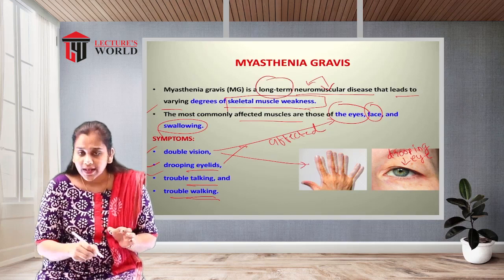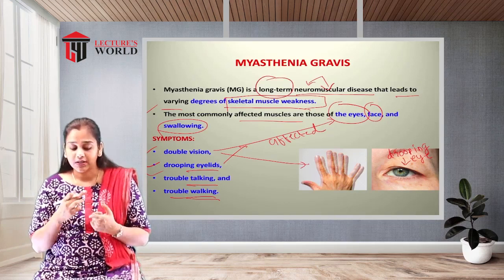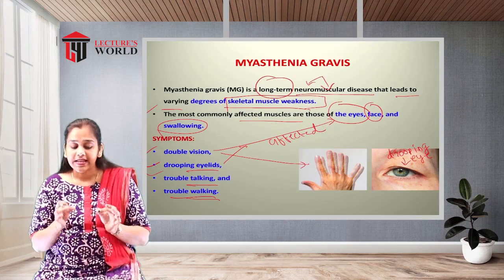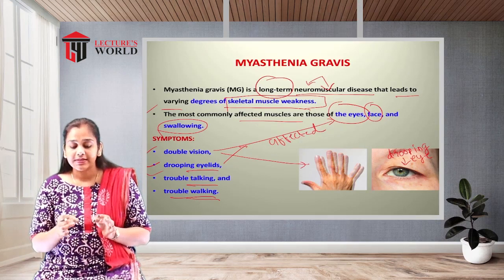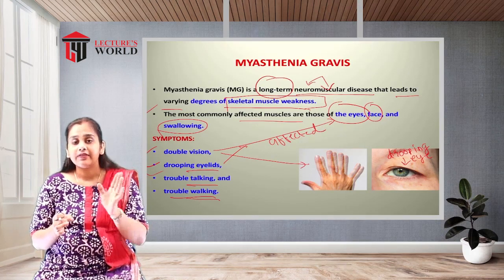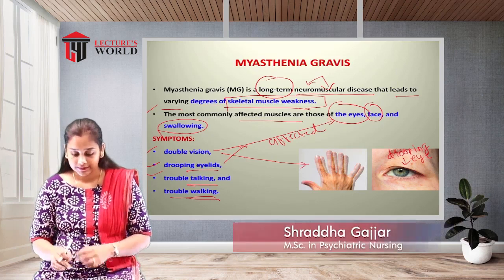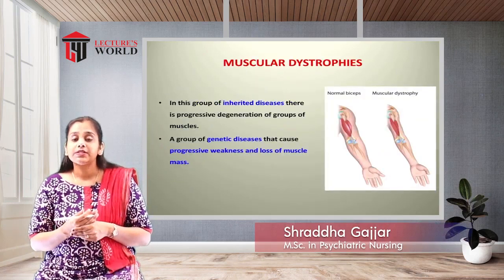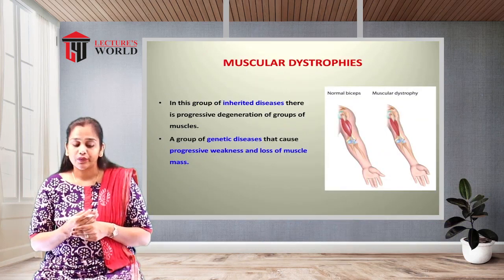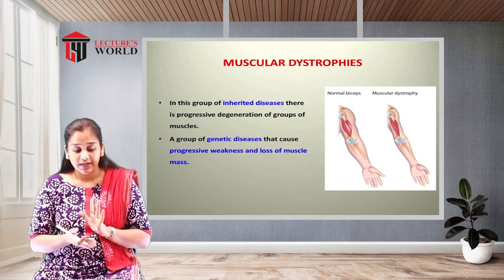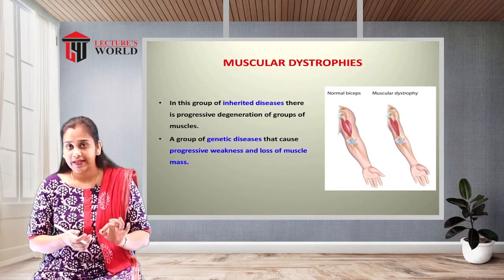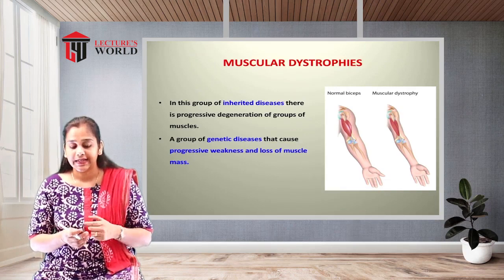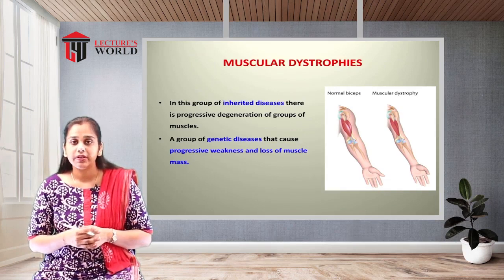So these are the symptoms of myasthenia gravis. In summary, it is a long-term neuromuscular disease in which skeletal muscle weakness occurs at a variety of levels. The second disease condition or abnormality of the muscles is muscular dystrophy.